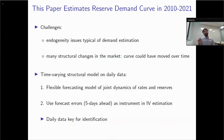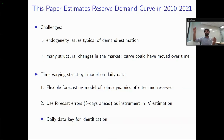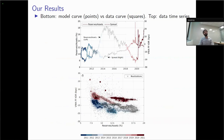How do we address these challenges? We use a time-varying structural model on daily data with two components. First, a flexible forecasting model of the joint dynamics of prices and quantities — rates and aggregate reserves. Second, we use the forecast errors for the path of reserves from the forecasting model as an instrument in our instrumental variable estimation of the structural reserve demand curve.